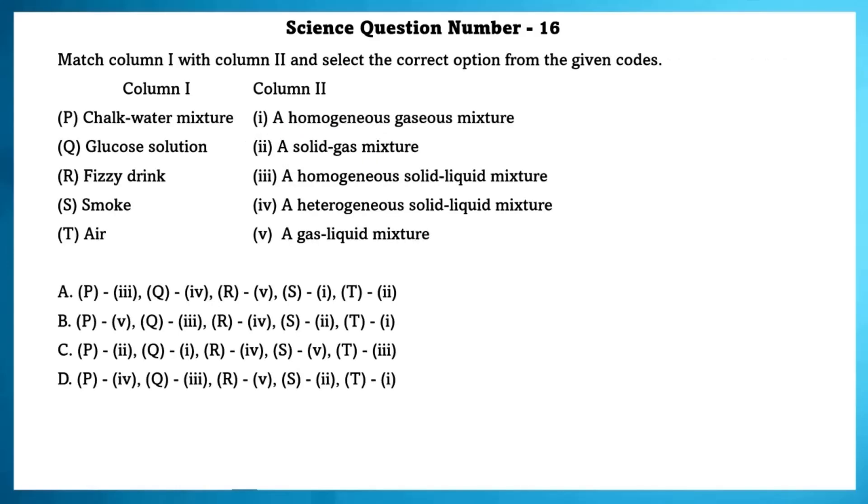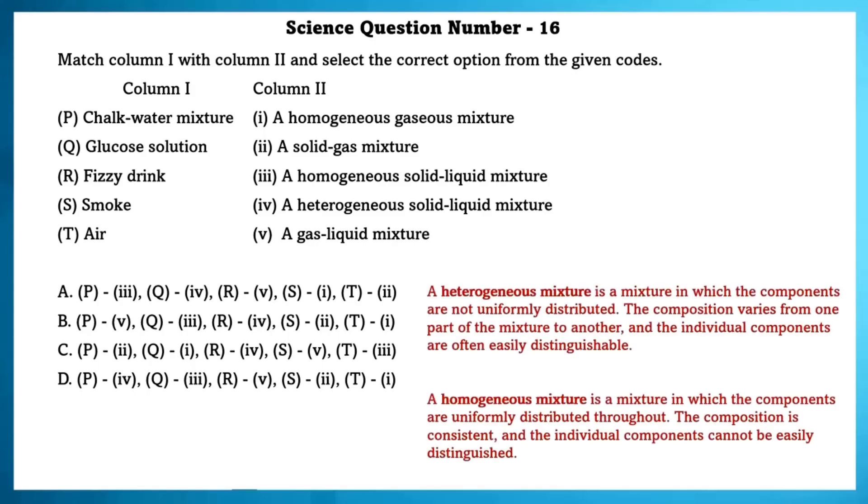Science question number 16. Match column 1 and column 2 and select the correct option from the given codes. A heterogeneous mixture is a mixture in which the components are not uniformly distributed, while a homogeneous mixture is a mixture in which the components are uniformly distributed throughout. Chalk water mixture is a heterogeneous solid-liquid mixture. Air is a homogeneous gaseous mixture. Smoke is a solid-gas mixture. Glucose solution is a homogeneous solid-liquid mixture. And a fuzzy drink is a gas-liquid mixture.